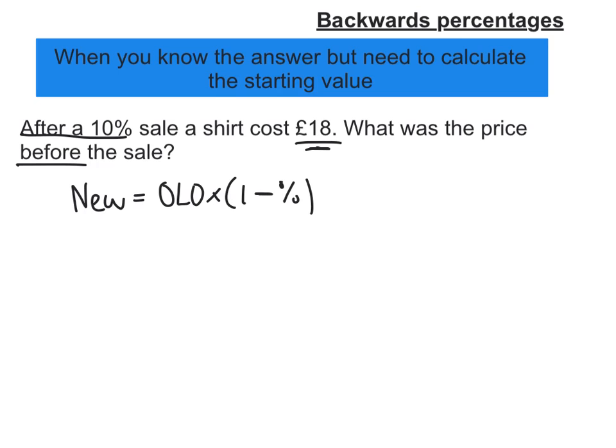What do we know? We know the new price is £18, so new equals 18. Old, well we don't know that, so let's just call that x. And then one minus, and the percentage is 10%, so let's write that as a decimal. What we've got is 18 equals x times 0.9.